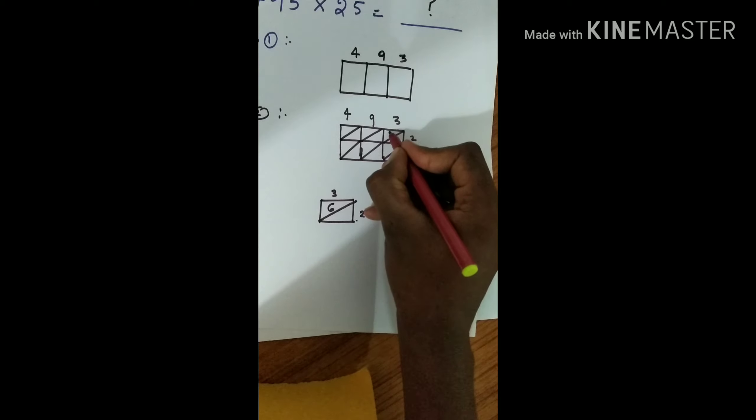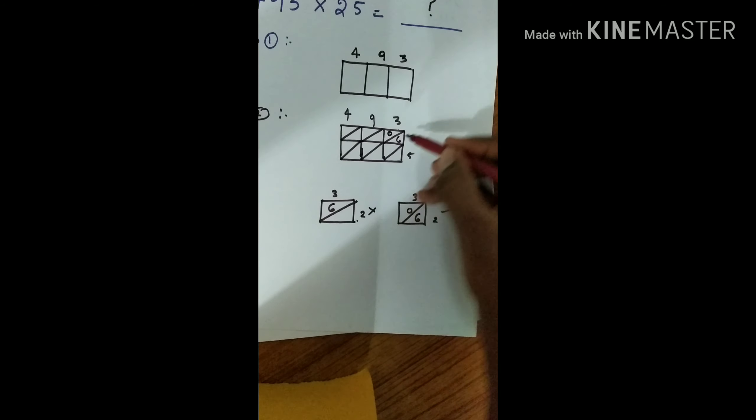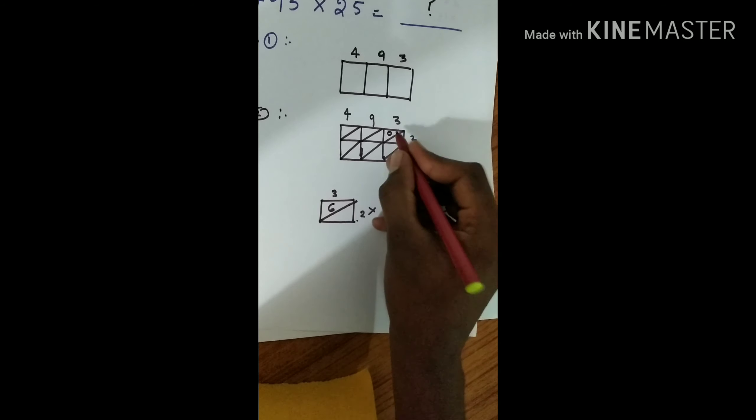Nine times two is eighteen, 1 and 8. Nine times five is forty-five, 4 and 5.